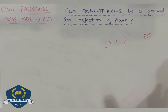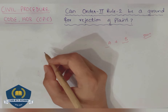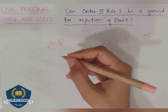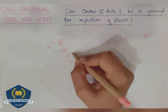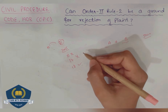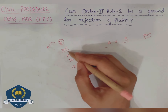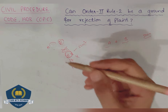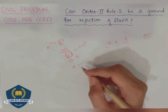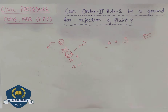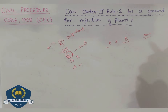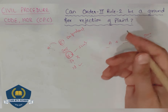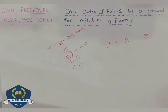Once you have relinquished a claim, you cannot file it again. For example, suppose A gave his house on rent to B in 2015. A filed a suit for recovery of rent for the year 2016 only, and not 2017. After the judgment, he now wants to file a suit for 2017 — he is barred from doing so. Also, if there are more than one relief and the decree holder, without the permission of court, has relinquished any relief, he then cannot file a suit for the remaining relief.